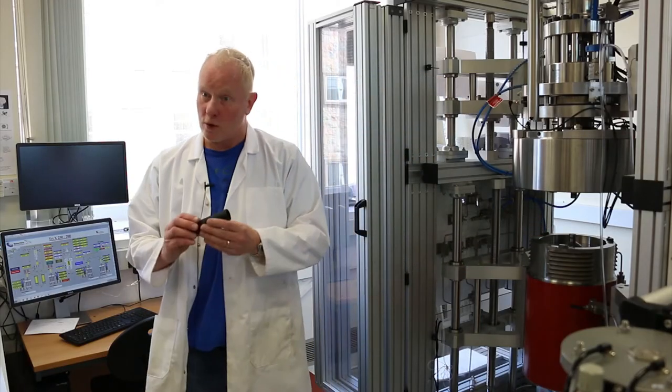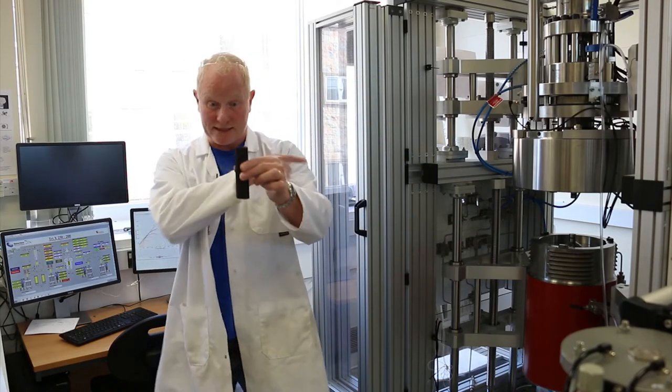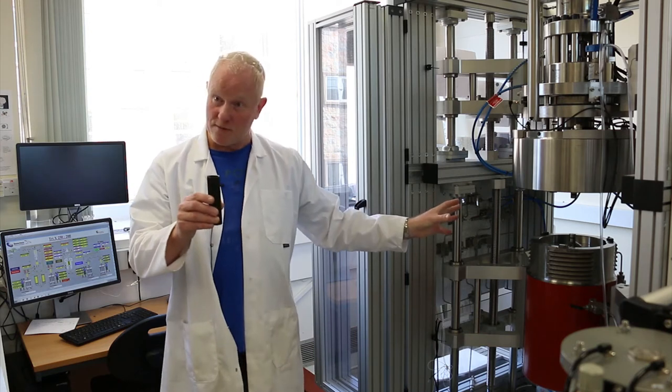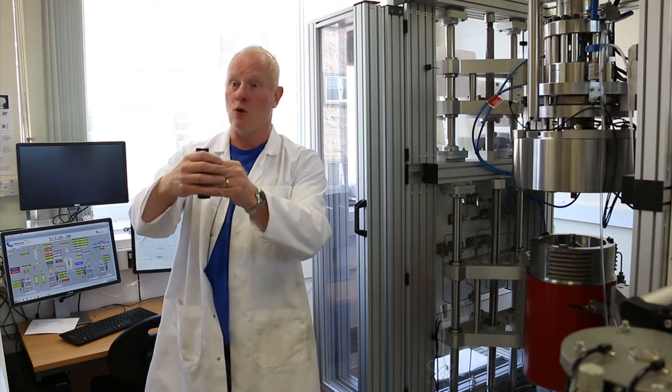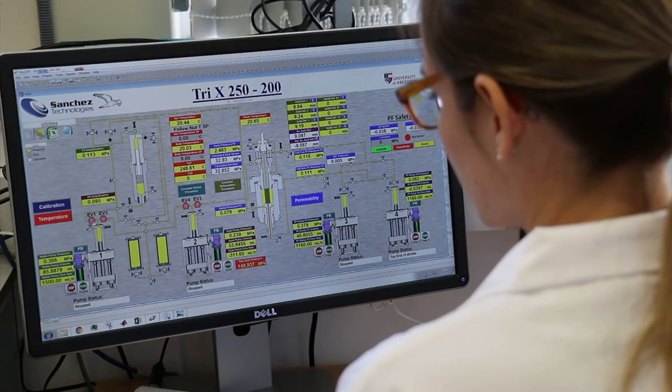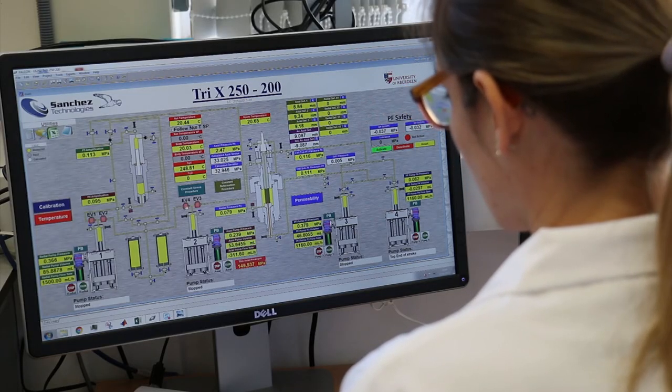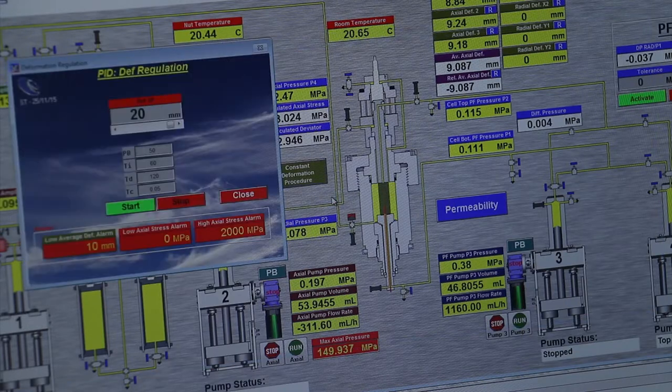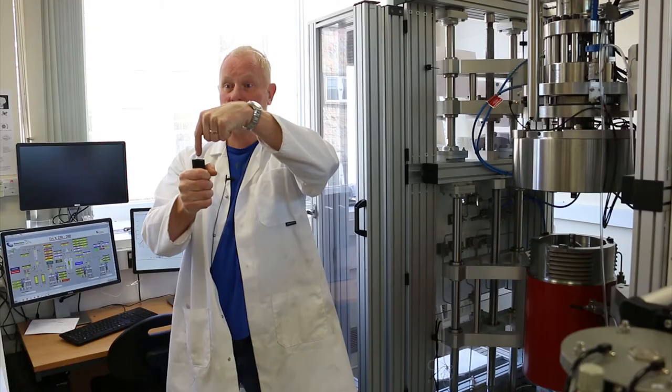When the sample is sitting in the chamber and we've closed it up, we would surround this by a clear oil and apply pressure through that. When that pressure's on at the chosen level, a finely controlled amount, we then apply a vertical stress to that.